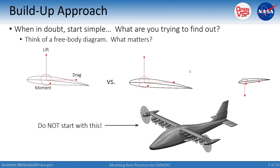You want to start simple and, as Rob mentioned at the very beginning of the workshop, think about what it is you're trying to find out. Think about a free body diagram — what really matters in the type of problem you're trying to solve. So if you only want the lift on a wing, all you really need is the wing in isolation. But if you want to try and get to something like a trim solution or try and account for the moments, then you probably need a tail. So you add additional geometry to the model as you build up in complexity.